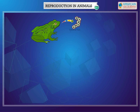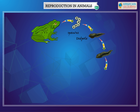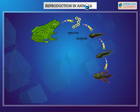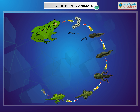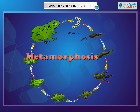A frog lays eggs in large clusters called spawns in a lake or pond. A tiny young one known as a tadpole hatches out of the egg. A tadpole looks very different from adult frogs — they have tails, swim in water, and eat water plants. A tadpole undergoes several changes, such as growing legs and losing its tail, before it becomes an adult. This process is called metamorphosis — a complete change from young form to adult.